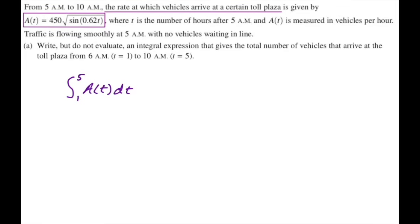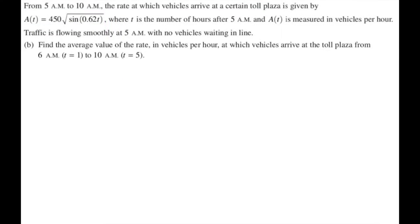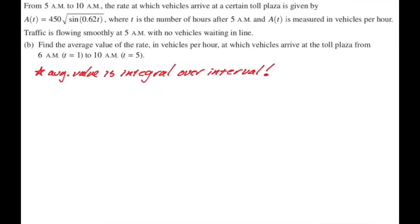That's a problem where they try to get you to understand how the problem is working. For part B, find the average value of the rate in vehicles per hour at which vehicles arrive at the toll plaza from T equals 1 to T equals 5. The average value in general is the integral over the interval. So we do the integral from 1 to 5 of A of T dt, divided by 5 minus 1.